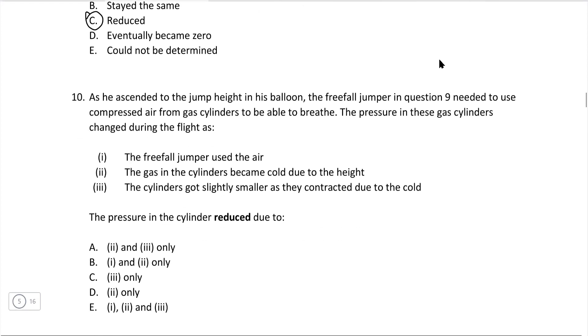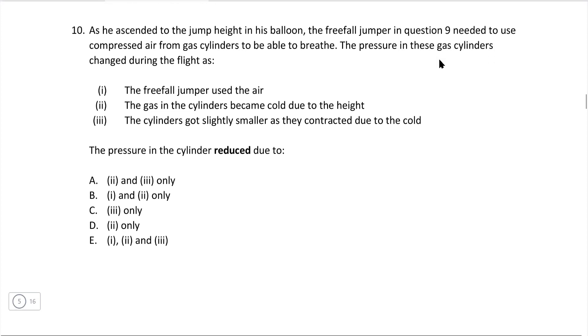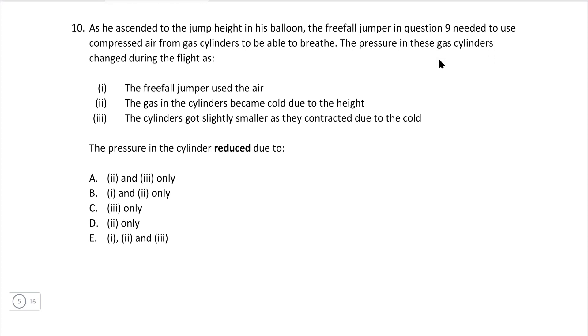Question 10. He ascended to jump the height and ballooned. The freefall jumper in question 9 needed to use compressed air to be able to breathe. The pressure in these gas cylinders changed during the flight as the freefall jumper used the air. The gas in the cylinders became cold due to the height. The cylinders got slightly smaller as they contracted due to the cold. The pressure in the cylinders reduced because of, that's a really interesting question. So let's have a look at them individually.